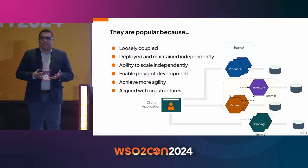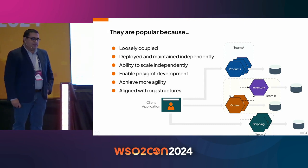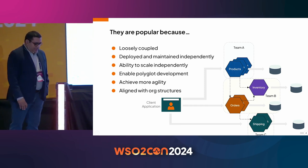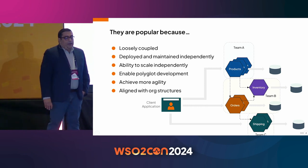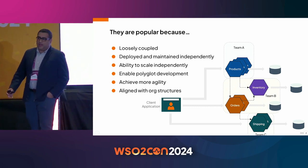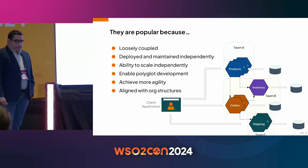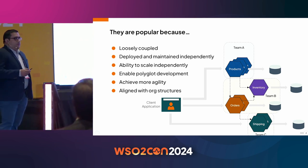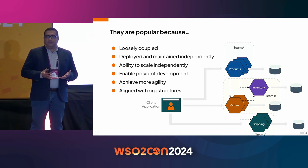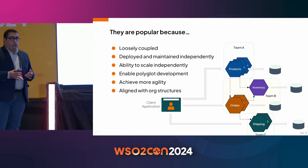There are a lot of benefits to architecting your applications using microservices. First, they are loosely coupled, so you can easily manage dependencies. They are deployed and maintained independently, so you can have different teams work on these services, and they also have the ability to scale independently. Because of that independence, there's no restriction on what technologies you can use for each service.